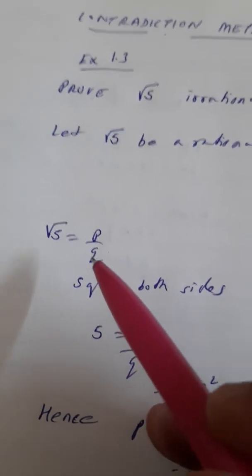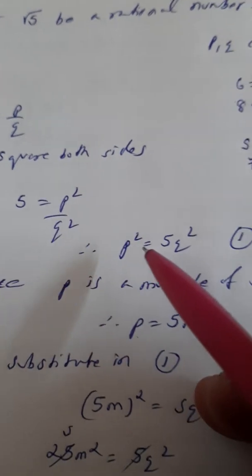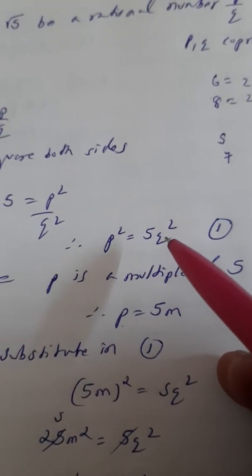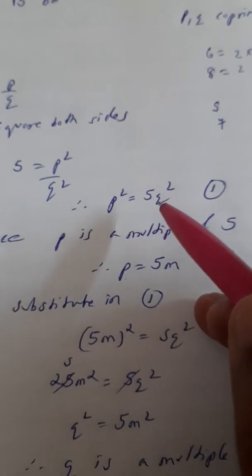Now since it's a rational number, we are equating root 5 as p by q. To remove the roots we are squaring both sides. We get 5 equal to p square by q square. Cross multiply, we get p square equal to 5q square.